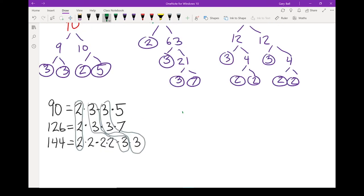As I go look at my greatest common factor, I've got a 2, and I've got two 3s. So my greatest common factor of these three numbers, 2 times 3 times 3, should give me 18.